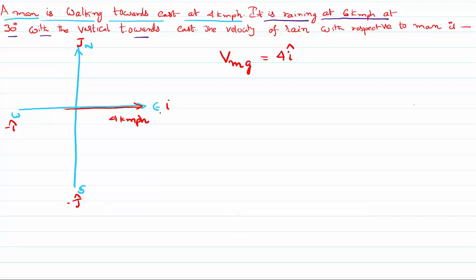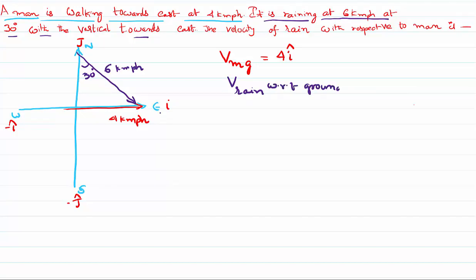The rain is falling towards the east, making an angle of 30 degrees with the vertical, at a velocity of 6 kmph. So the velocity of the rain with respect to ground is 6 kmph. Since it is not purely along i-cap or j-cap — it is in between x and y — I have to resolve this velocity into components.